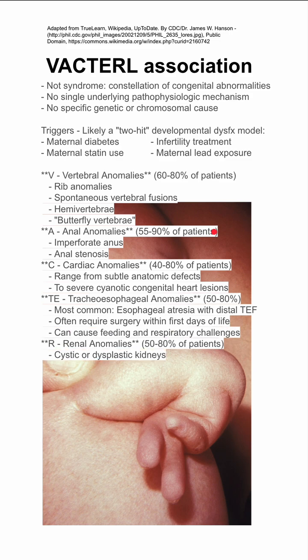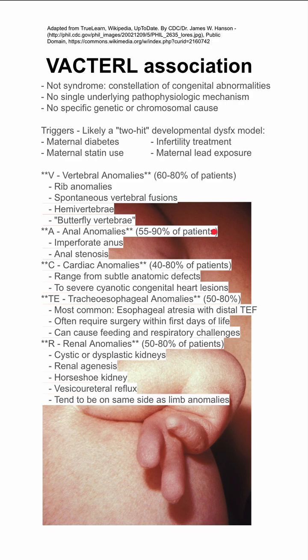R is for renal anomalies, seen in 50% to 80% of patients. They can have cystic or dysplastic kidneys with renal agenesis, horseshoe kidney, or vesicoureteral reflux, and these tend to occur on the same side as the limb abnormalities.